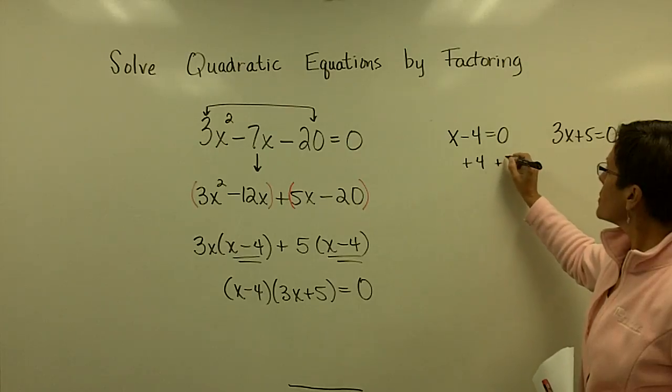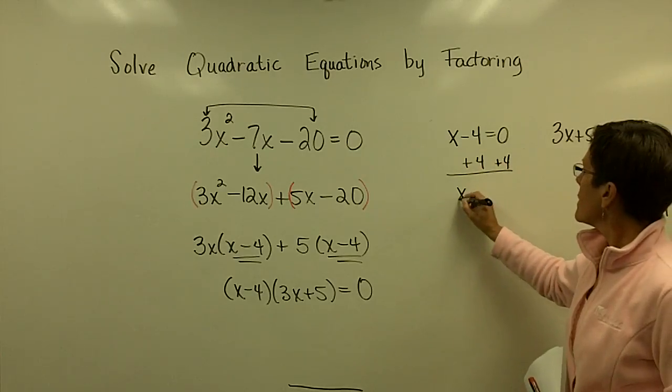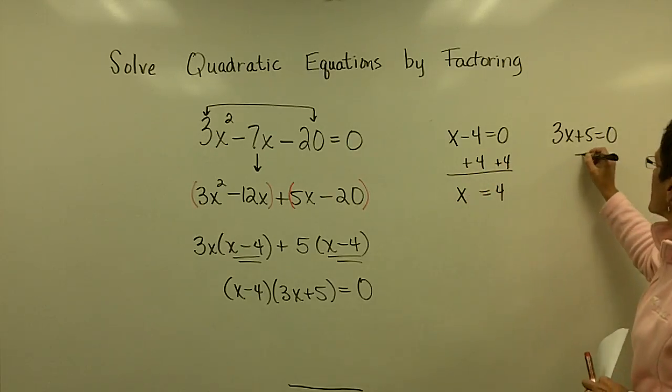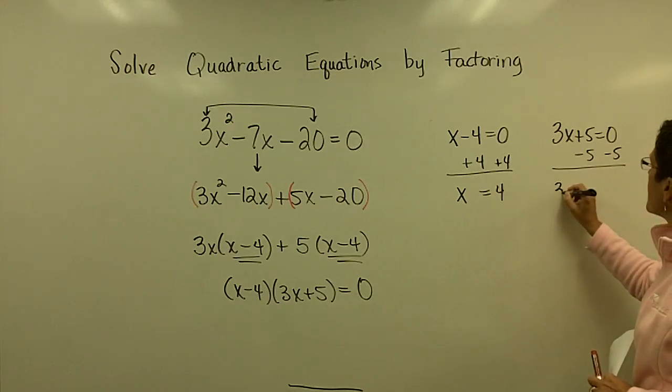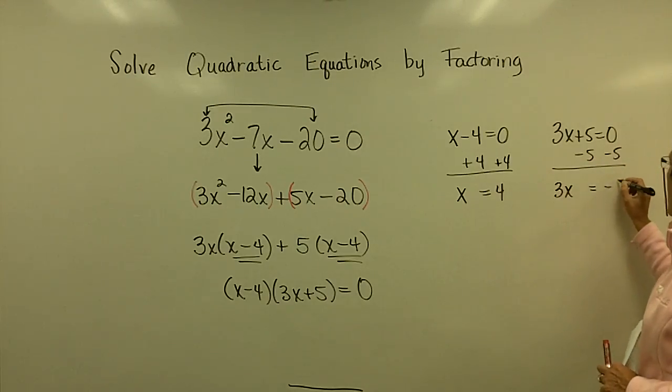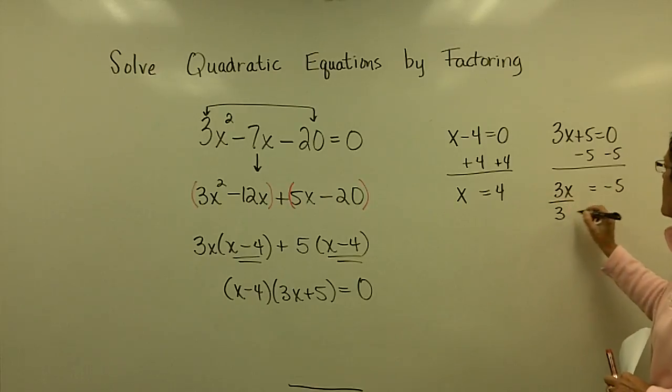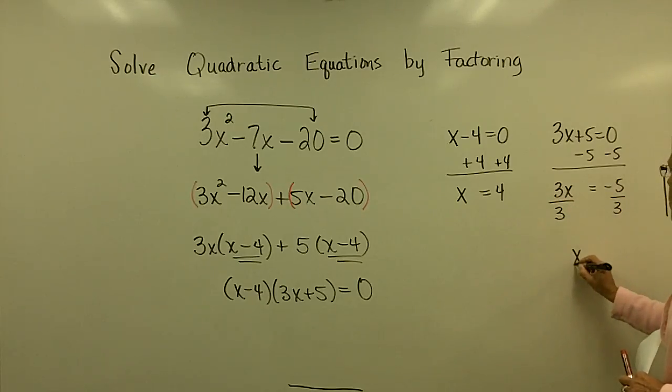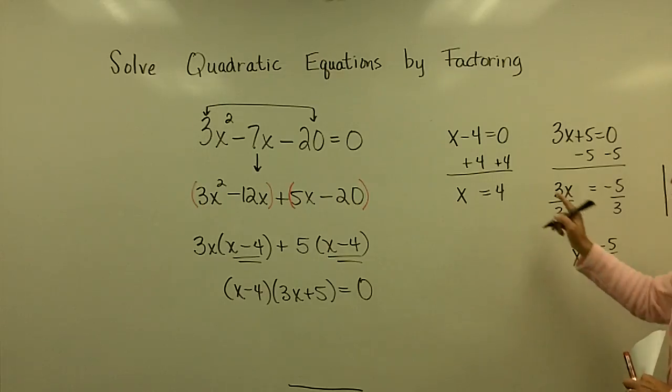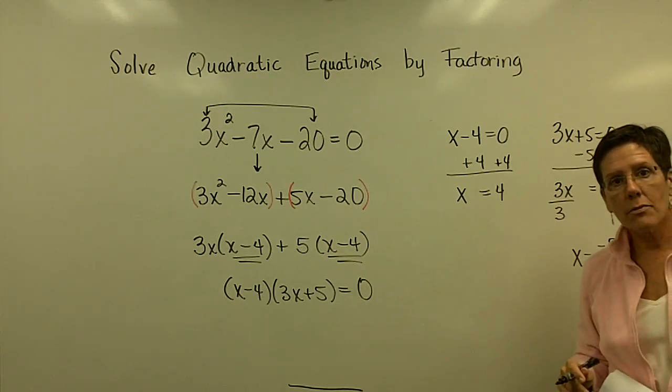I'm going to add 4 to both sides. Here I'm going to subtract 5 and then divide by 3. So one of the answers is negative 5 thirds and the other answer is positive 4.